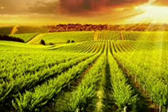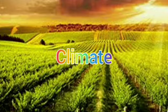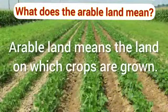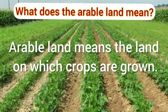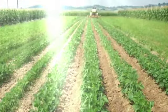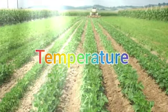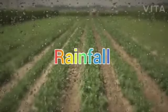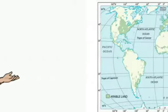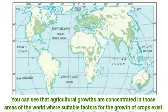Climate exerts the greatest control over the arable land of the world. Arable land means the land on which crops are grown. Suitable climatic conditions such as adequate temperature and rainfall help in the growth of crops. Looking at the world map, you can see that agricultural activity is concentrated in those areas of the world where suitable factors for the growth of crops exist.